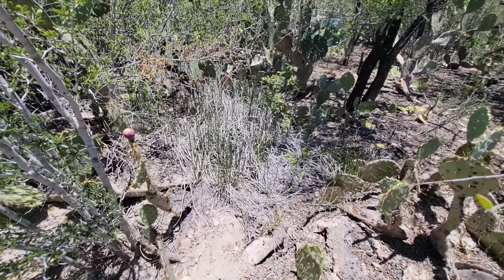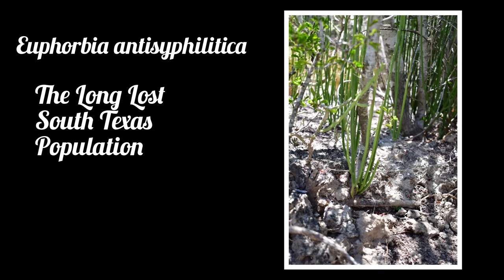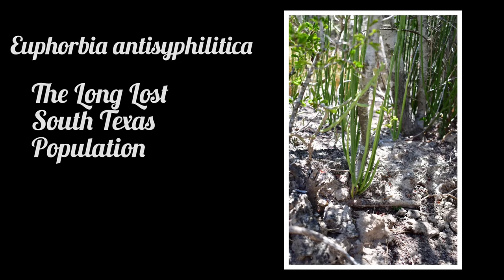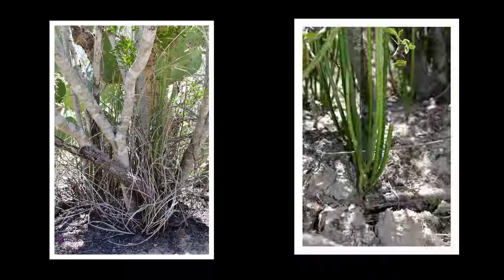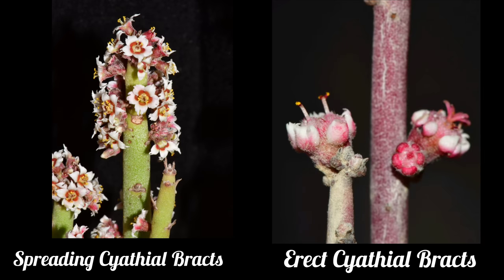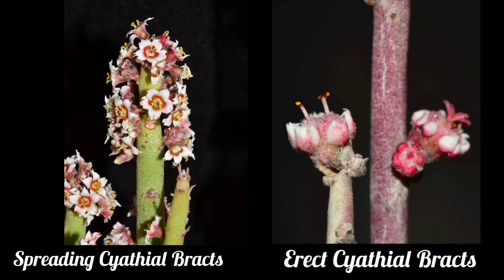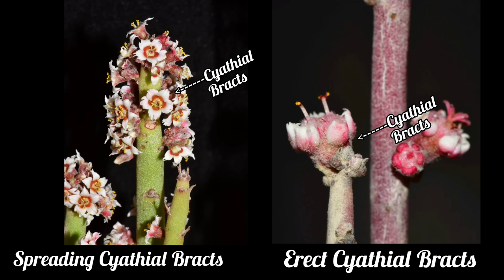This plant really confounded the hell out of me. Its occurrence here is very odd, and the way in which it grows is very odd as well. So I had to consult my resident euphorbia expert Nathan Taylor, and he filled me in. It turns out there are two morphologically distinct populations of Euphorbia antisyphilitica: one to the south in Mexico with erect cyatheal bracts — those little white petal-looking things you see here — and the population to the west with spreading cyatheal bracts.